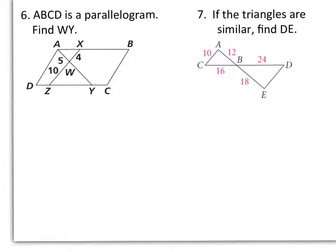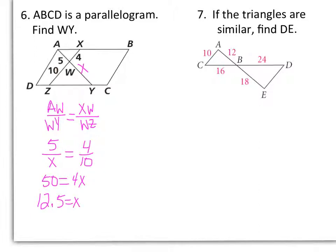Number 6. ABCD is a parallelogram, and we want to find the length of WY. I'm going to call WY X. We can set up a proportion to find our missing side. I can say AW is to WY as XW is to WZ. So substituting in our values, 5 is to X as 4 is to 10. And taking the cross product, 50 equals 4X. Dividing by 4, we get 12.5. So that means WY is equal to 12.5.